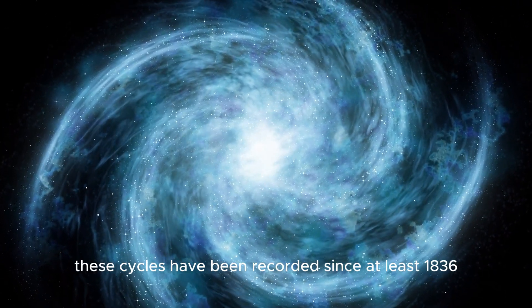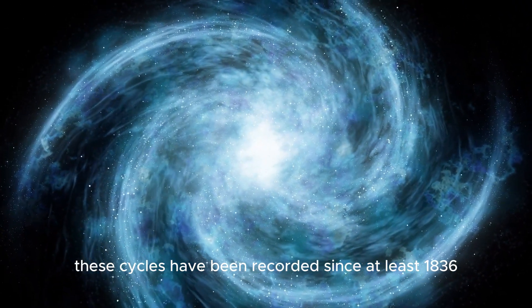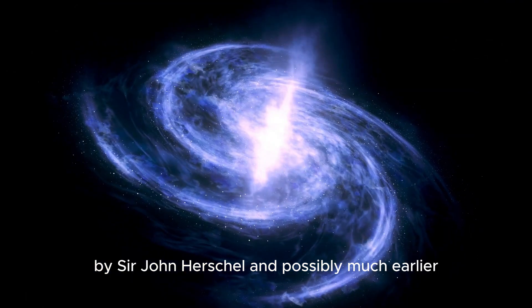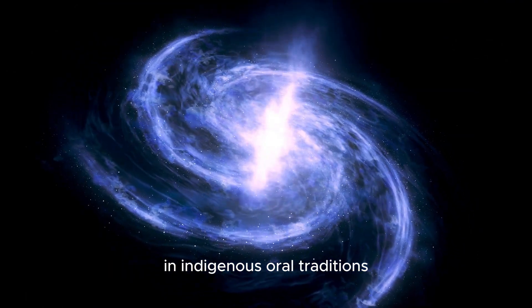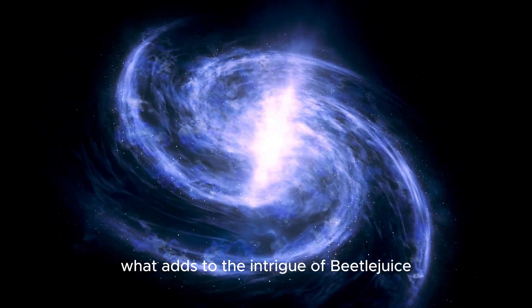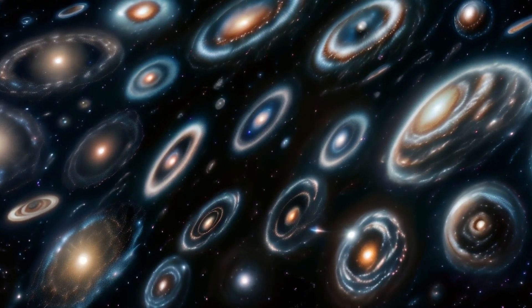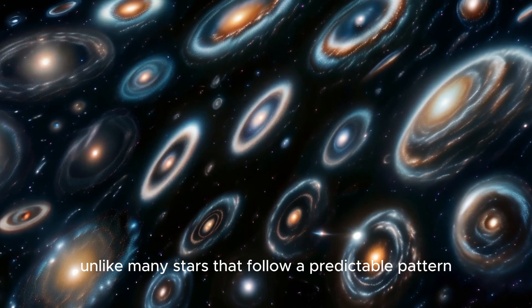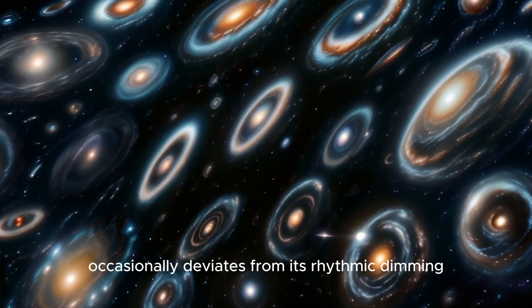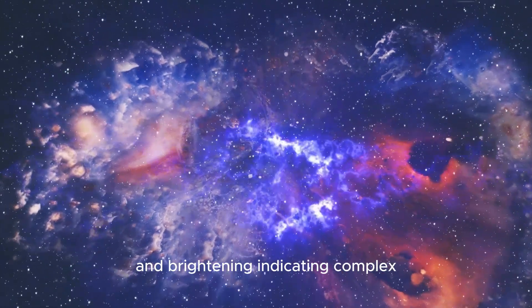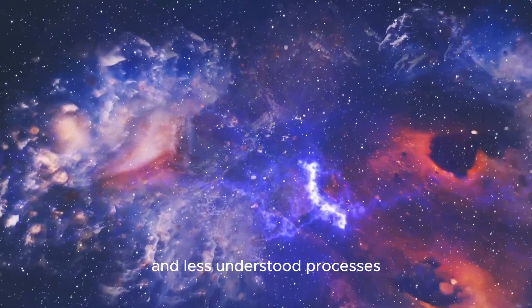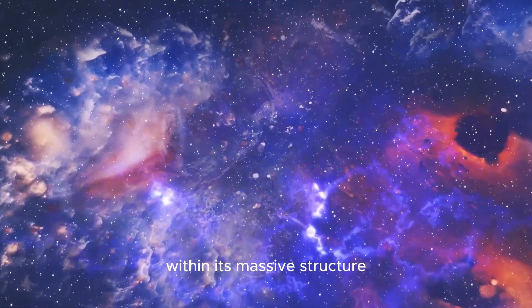Its light occasionally waxes and wanes in a natural dance of brightness following a multi-day cycle and a longer cycle spanning around five years. These cycles have been recorded since at least 1836 by Sir John Herschel and possibly much earlier in indigenous oral traditions. What adds to the intrigue of Betelgeuse is not just its changing brightness but its anomaly. Unlike many stars that follow a predictable pattern, Betelgeuse occasionally deviates from its rhythmic dimming and brightening, indicating complex and less understood processes within its massive structure.